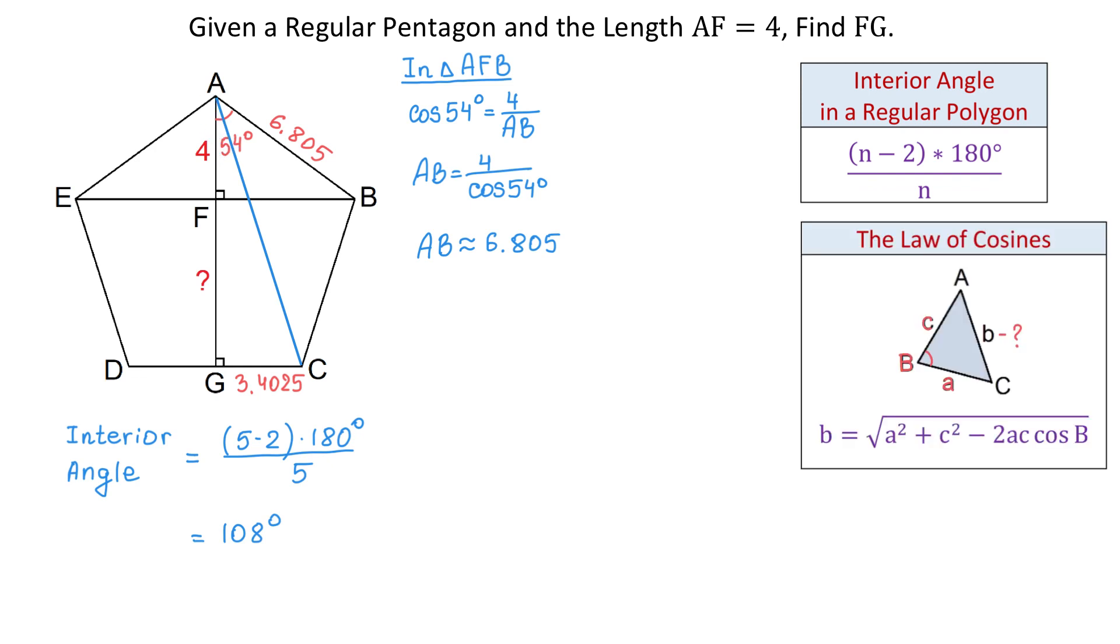The law of cosines tells us that if we have two sides A and C and the angle between them, then we can find the opposite side using this formula. B equals square root of A squared plus C squared minus 2AC cosine of angle B. In the triangle ABC, both these sides have the length of 6.805 and angle B measures 108 degrees.